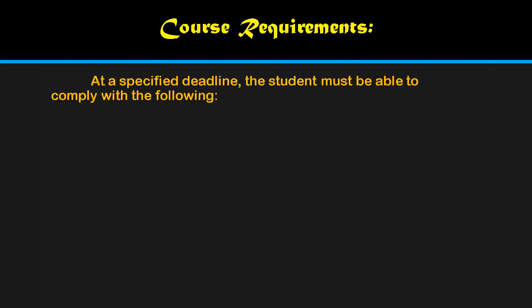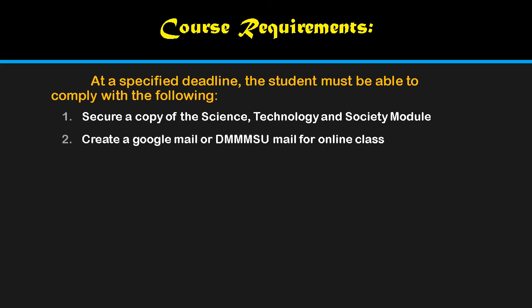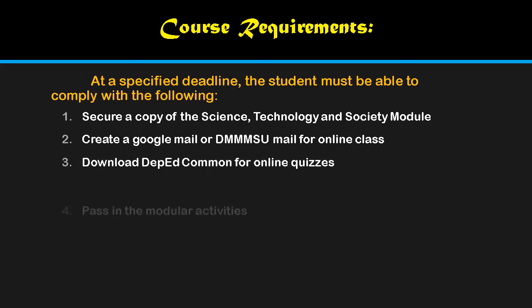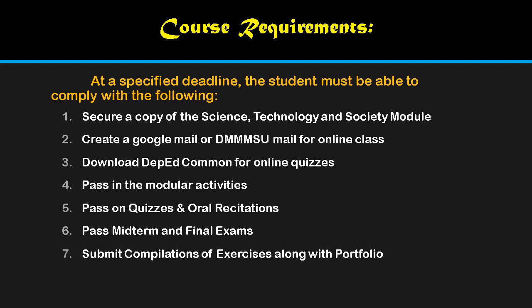We also have course requirements with specified deadlines. The student must comply with the following: first, secure a copy of the Science, Technology, and Society module available from our department chairperson. Second, create a Google Mail or DIMSU Mail for online class. Third, download DepEd Commons for online quizzes. Fourth, pass in the modular activities. Fifth, pass quizzes and oral recitation in our group chat. You also have to pass midterm and final examinations, submit a compilation of exercises along with your portfolio, and comply with our projects.